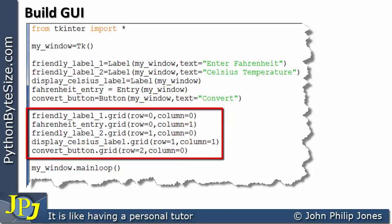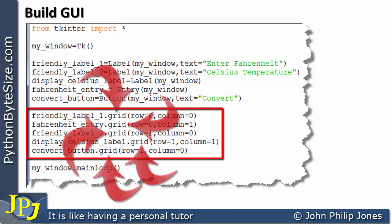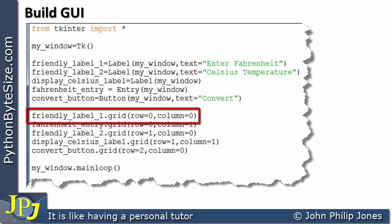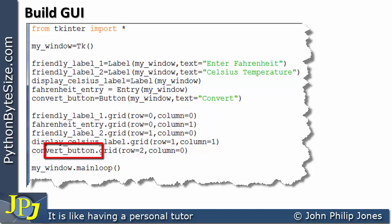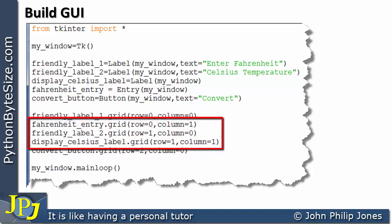These five lines of the program are responsible for positioning the created widgets on the window, and in all cases the grid method was used. For example, this statement positions the friendly_label_1 at row 0, column 0. Another line positions the button at row 2, column 0. The remaining statements also use the grid method, setting the row and column as appropriate.